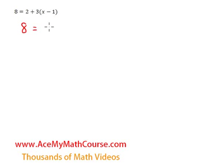And how do we get started? Well, first I can just expand this and essentially distribute the 3. 3 times x is 3x, 3 times negative 1 is negative 3.